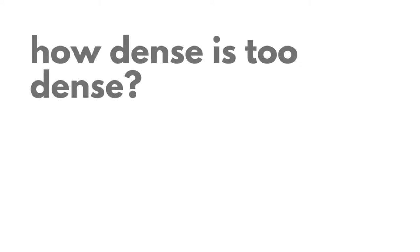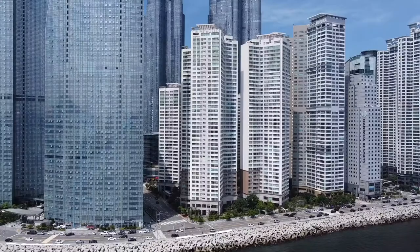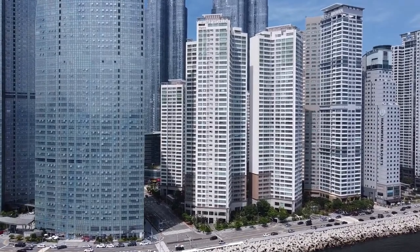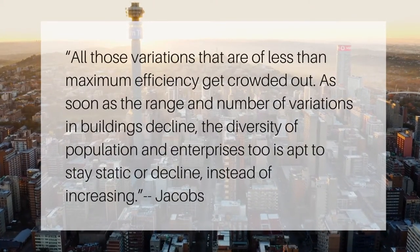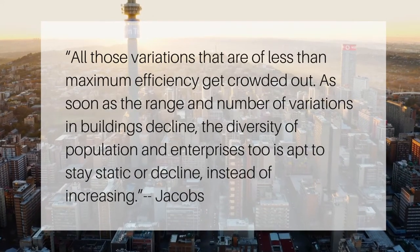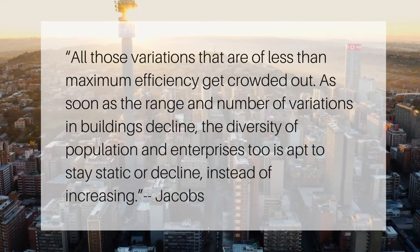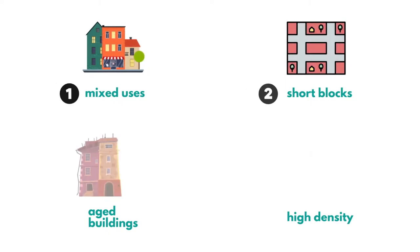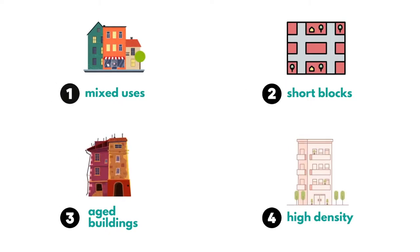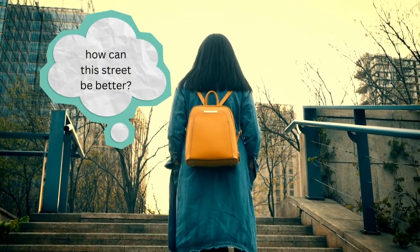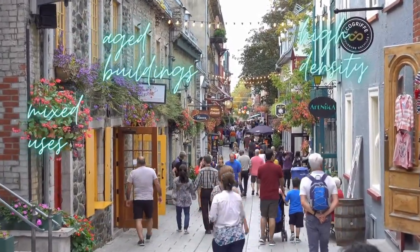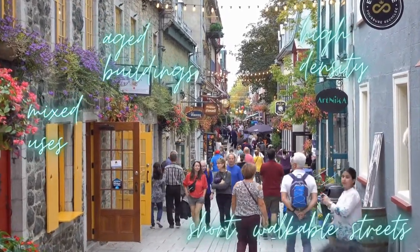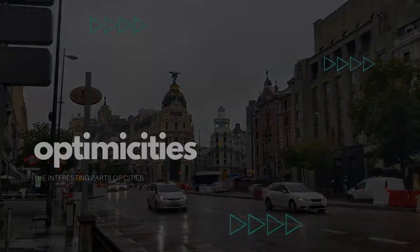And yes, there is such a thing as too much density, and this occurs when the density begins to repress diversity rather than promote it. It comes down to profit. She says: all those variations that are of less than maximum efficiency get crowded out. As soon as the range and number of variations in buildings decline, the diversity of population and enterprises too is apt to stay static or decline instead of increasing. And as always, all four of these conditions need to be present for a successful neighborhood. We've come to the end of our Jane Jacobs series. When it comes to urban areas, I think Jacobs' principles are still extremely relevant today. Though some examples she uses in her book are a bit outdated, these four principles are something I always think about when walking on a street. Thanks for watching, and as always, I make my videos more as a conversation starter, so feel free to leave your comments and arguments below.